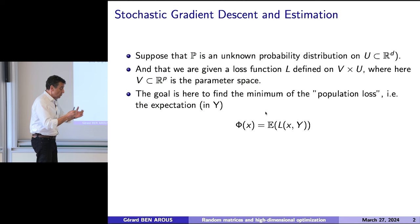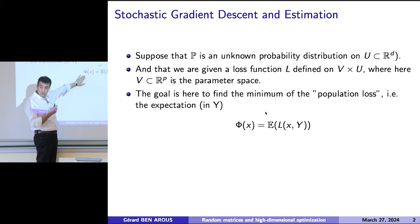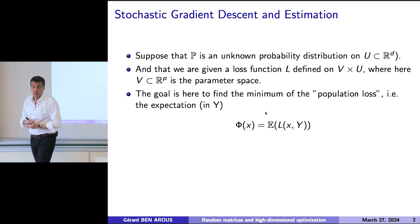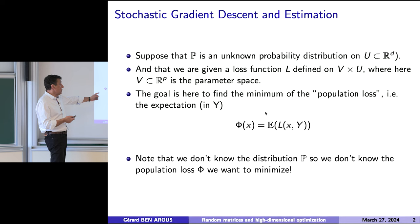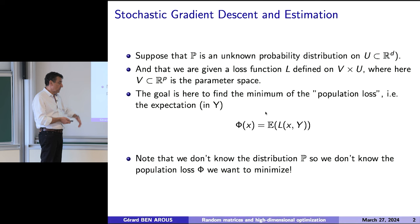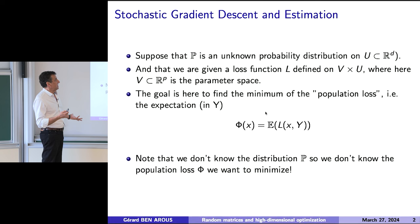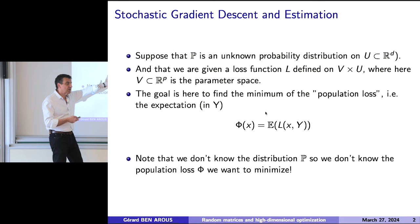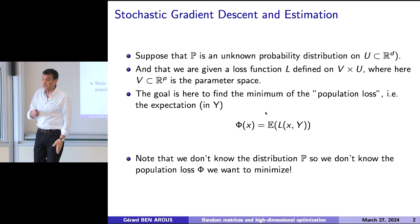You want two things: you want that the minimizer of phi be close to the parameter you want to estimate, and you also want this optimization problem to be simple. Of course, we don't know the true population, so we cannot really compute phi usually. In all the academic examples I'm giving, phi is there so that we know it, but in the abstract we don't know it. So we cannot simply minimize phi. If I were asking this, you would say simply let's do a gradient flow on phi — but you don't have phi.